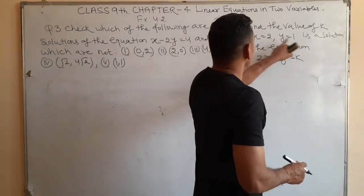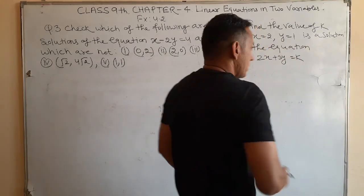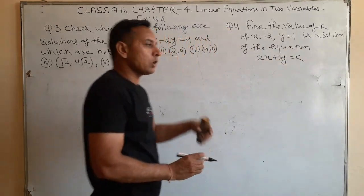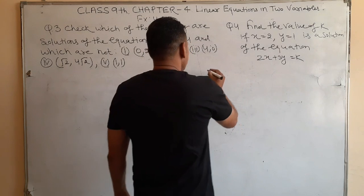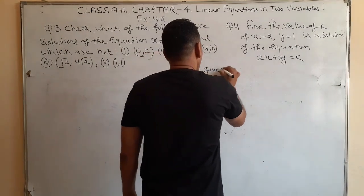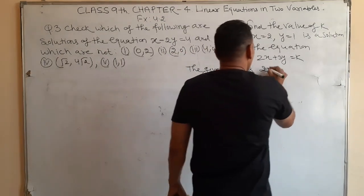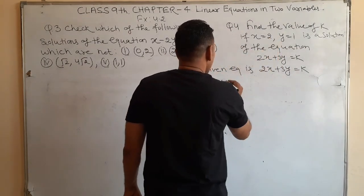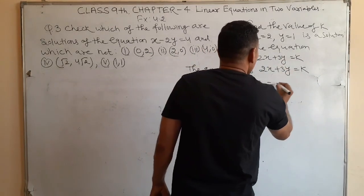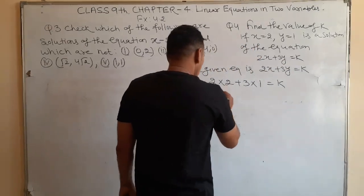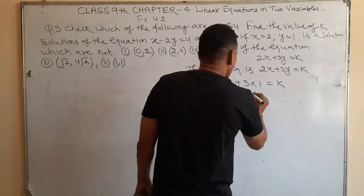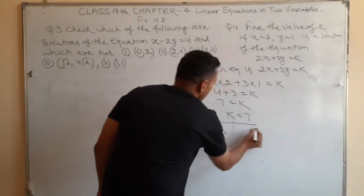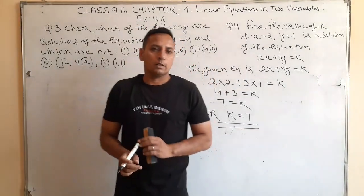Question number 4: Find the value of k if x equals 2 and y equals 1 is a solution of the given equation. The given equation is 2x plus 3y equals k. Substituting x equals 2 and y equals 1: 2 times 2 plus 3 times 1 equals k, so 4 plus 3 equals k, therefore k equals 7.